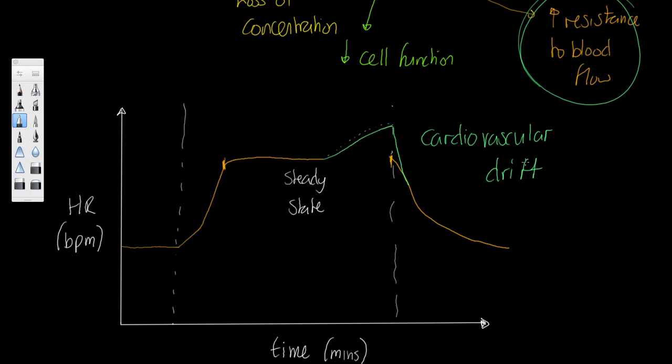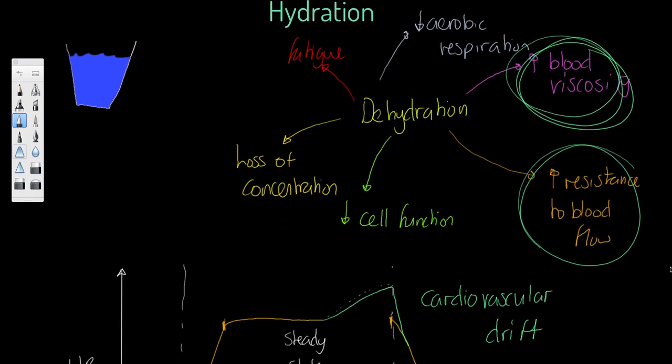And as that goes on, the performer has to maintain cardiac output. The amount of blood leaving the heart per minute has to be maintained. The only way to do that is increase heart rate. So we could say that you get an increase in heart rate to compensate for reduced stroke volume. And that's what we mean by cardiovascular drift. So dehydration is really not a good thing for performance.